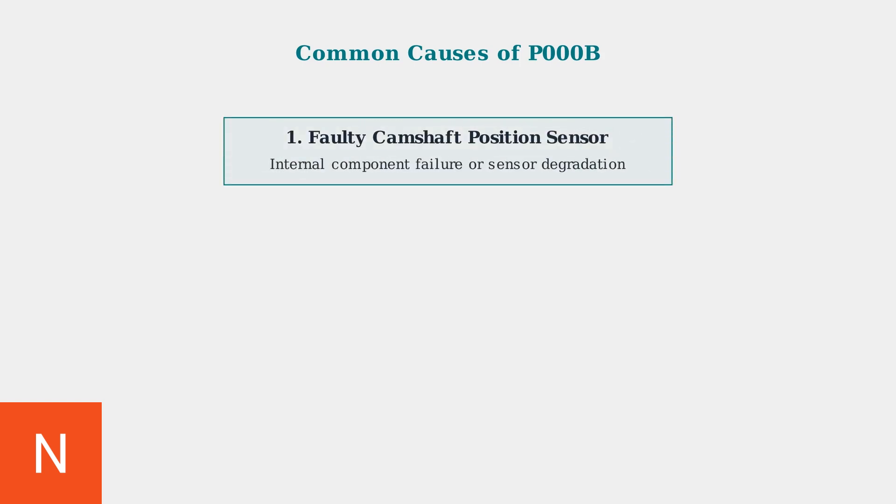Now let's examine the most common causes of Code P000B. Understanding these causes helps in proper diagnosis and repair. The most common cause is a faulty camshaft position sensor itself. Internal components can fail or degrade over time, causing slow or inaccurate readings.